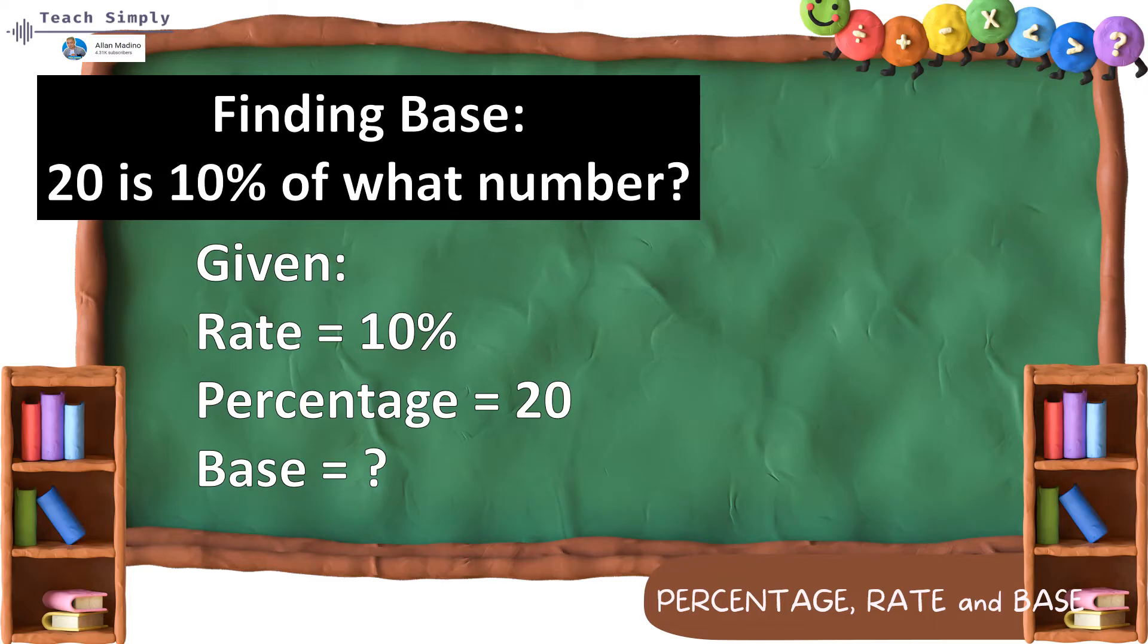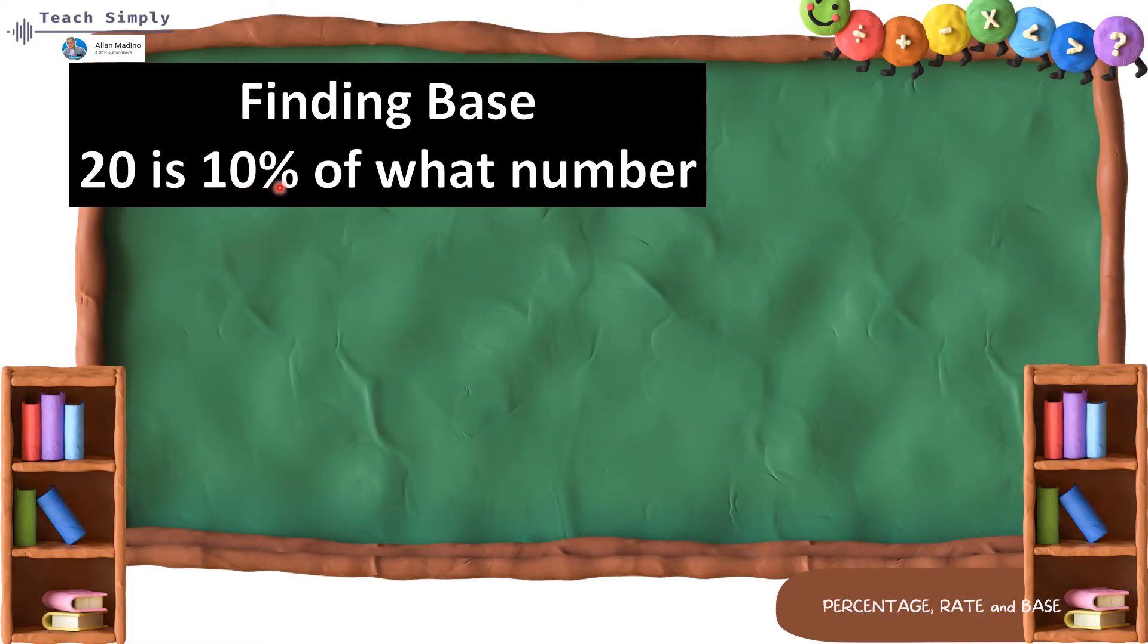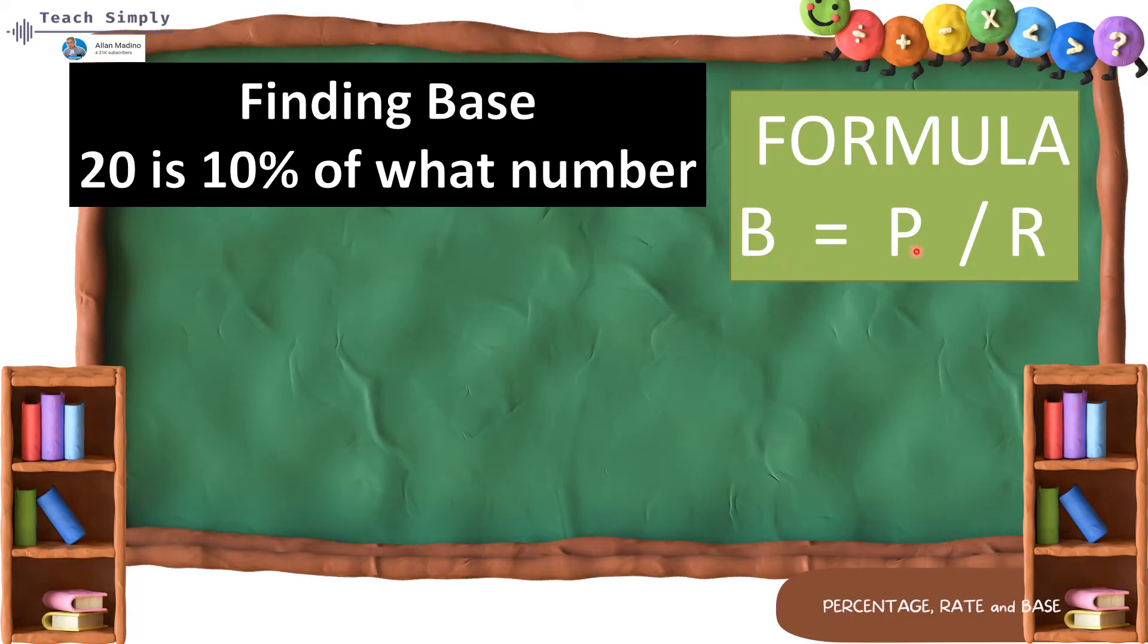Ano ang number na pagkukuna natin ang 10%? So, basing on the 3 formula, itong pangalawang formula ang gagamitin natin since base is missing. So, base is equals to percentage divided by the rate. For 20%, or 20 is 10% of what number? The formula to be used is B is equals to percentage divided by the rate. So, ito na yung formula na gagamitin natin since si base ang missing sa ating numbers. So, base is equals to percent, which is 20, and then divided by our rate, which is 10%. So, kung nakikita natin, 20 is 10% of what number? Walang sumunod na number sa word na off. Therefore, sabi ko kanina, kung base ang ating hahanapin, dapat sumusunod siya sa word na off. Since walang number na sumunod sa off, so, si base ang ating missing.